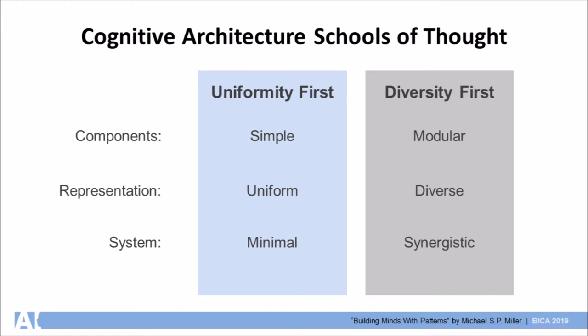In his 2009 paper, Towards a Cognitive Hourglass, Paul Rosenblum makes the distinction between Uniformity First and Diversity First architectures. Uniformity First architectures favor simplicity and elegance.